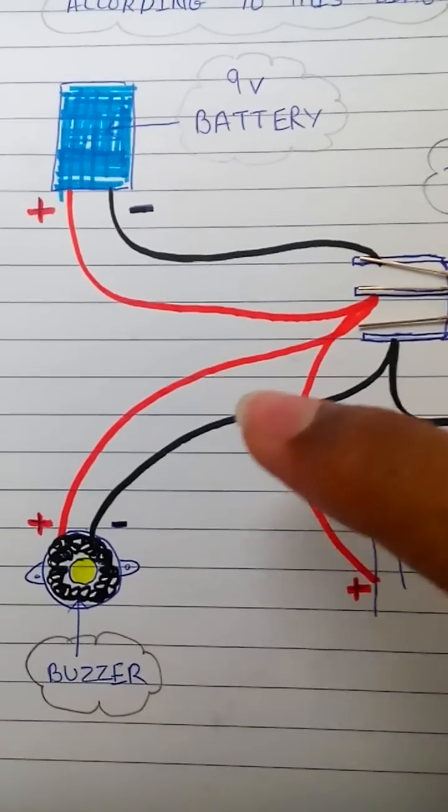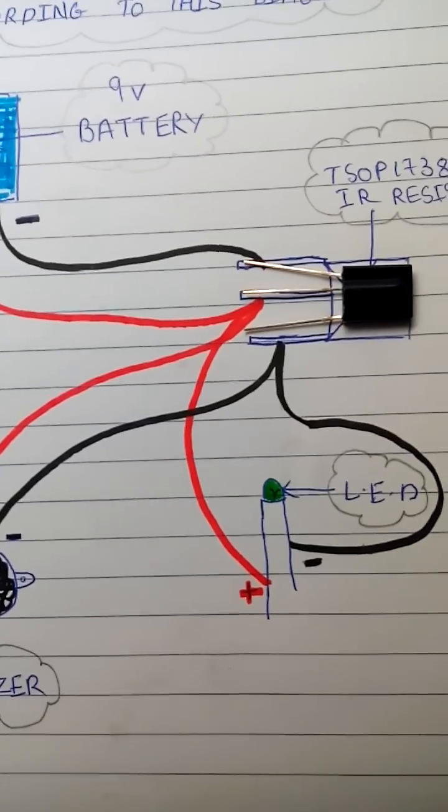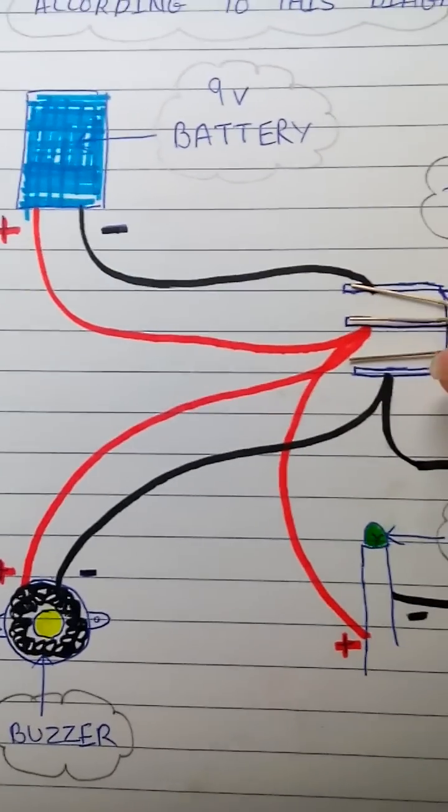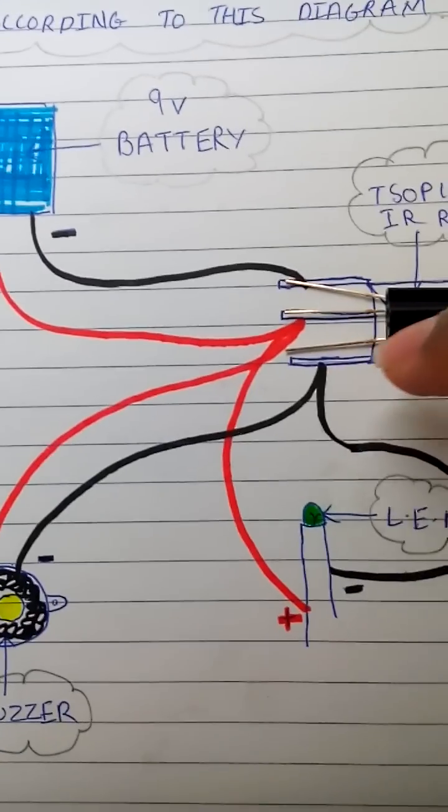Then the negative part of the buzzer and the negative part of the LED go to the last pin, the third pin of the TSOP1738.